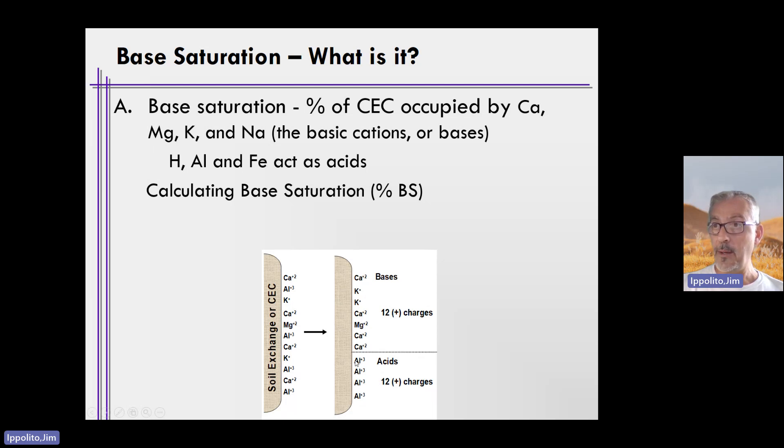If you recall that when aluminum is kicked off the exchange sites, it doesn't generate acidity directly. Aluminum undergoes hydrolysis. And in the presence of water, aluminum can generate three free hydrogen ions via hydrolysis. And that is acid. So that's why aluminum, and if we had iron in here as well, iron plus three, they would be considered acids along with hydrogen.